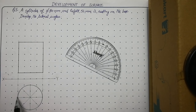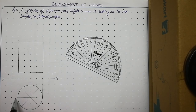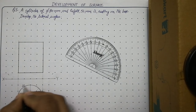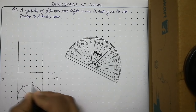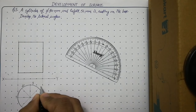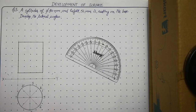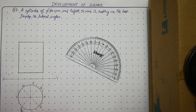Name these points on the circle starting from a particular point in clockwise direction: 1, 2, 3, 4, 5, 6, 7, 8.